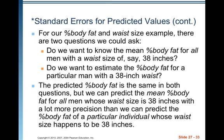For our percent body fat and waist size example, there are two questions we could ask. Do we want to know the mean percent body fat for all men with a waist size of, say, 38 inches? Or do we want to estimate the percent body fat for a particular individual man with a 38-inch waist? The predicted percent body fat is the same in both questions, but we can predict the mean percentage body fat for all men whose waist size is 38 inches with a lot more precision than we can predict the percent body fat of a particular individual whose waist size happens to be 38 inches. Why? Because averages are much less variable than individuals.